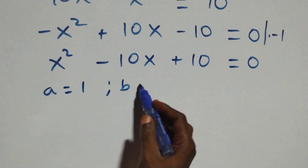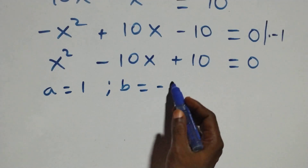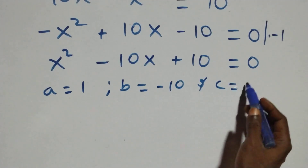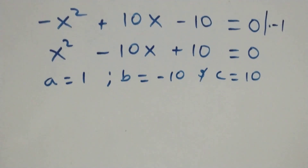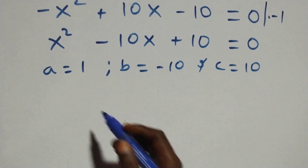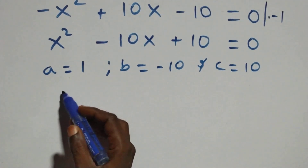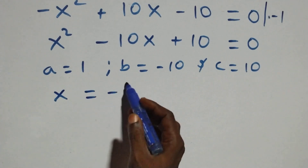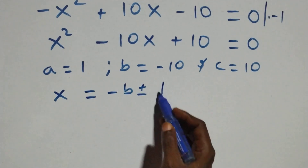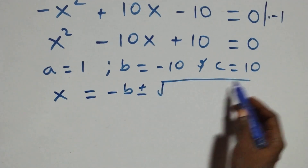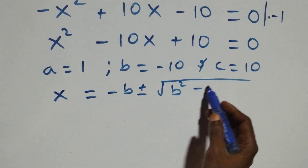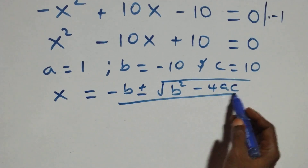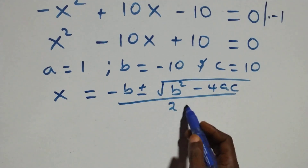We have a equals to 1, b equals to minus 10, and c equals to 10. Then applying the quadratic formula, we have x equals to minus b plus or minus square root of b squared minus 4ac, over 2a.